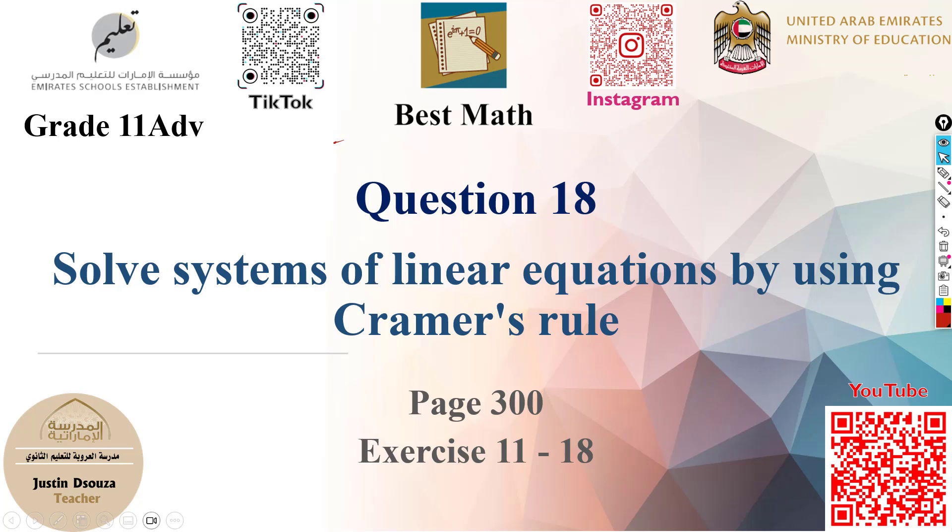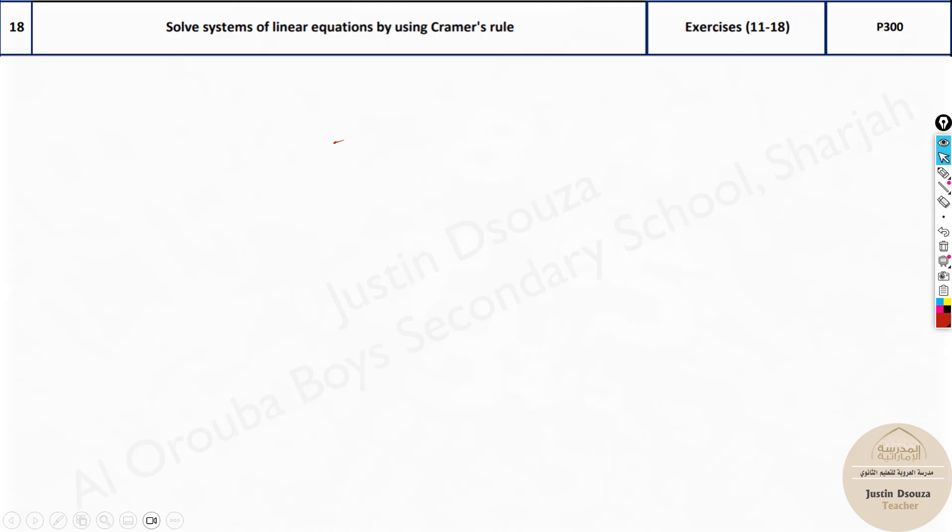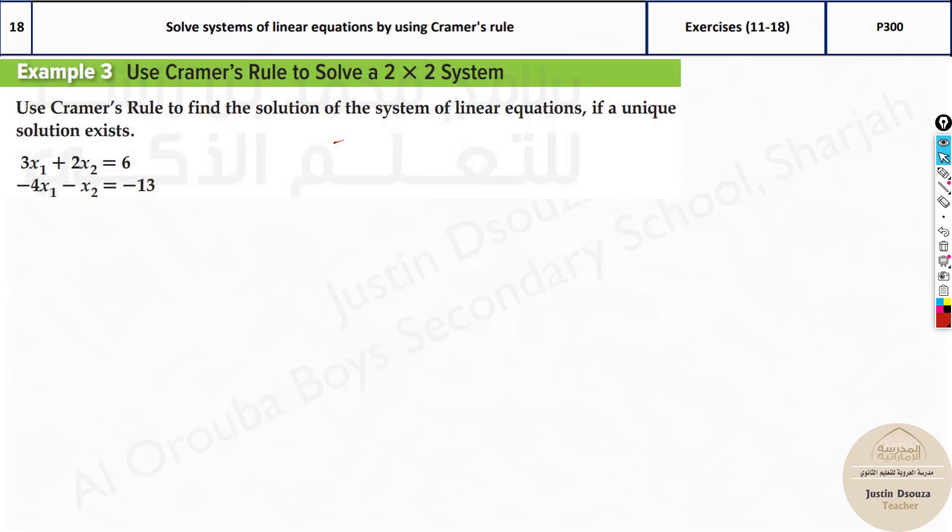Question 18 is to solve systems of linear equations by Cramer's rule. The problems can be of two types. It can be two equations with only two variables, or it'll be three equations with three variables. It can be x, y, z or x1, x2, x3. Now let's start solving this one.